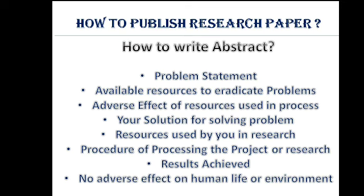The next question is how to write an abstract. You can write an abstract covering a minimum of eight points. The first point is the problem statement — write what problem you are going to discuss in your project. The second point is available resources to eradicate the problem — what resources, projects, or ongoing research exist to solve that problem. The third point is the adverse effect of those resources — any adverse effect on society, environment, or human life. The fourth point is your solution for solving that problem — what you are providing in your research, written in one line.